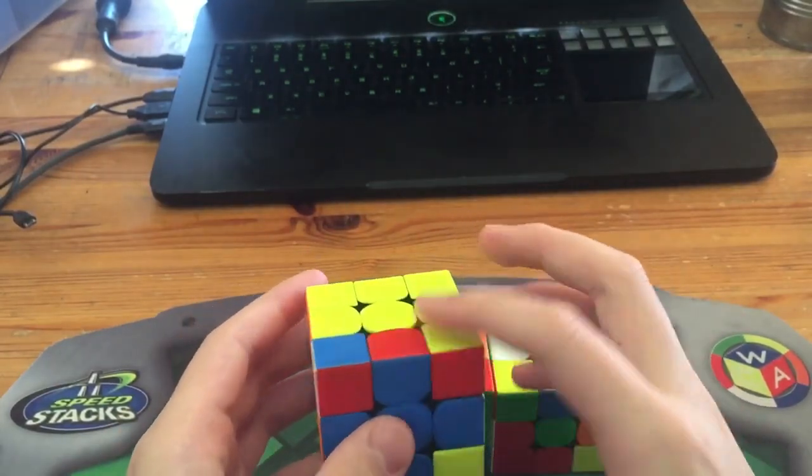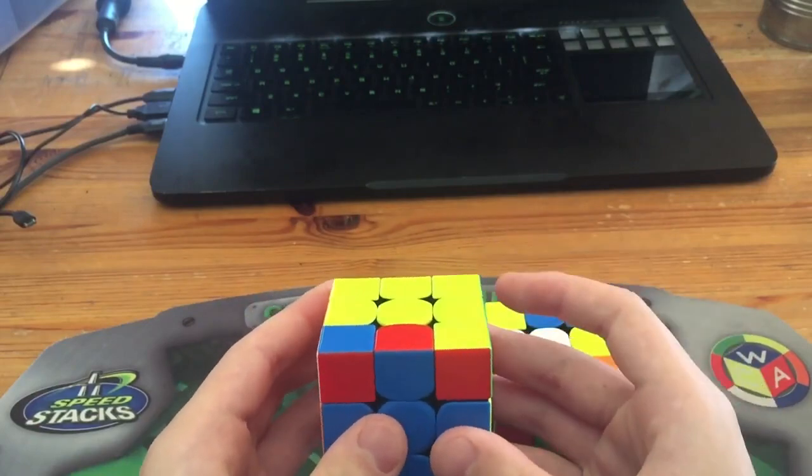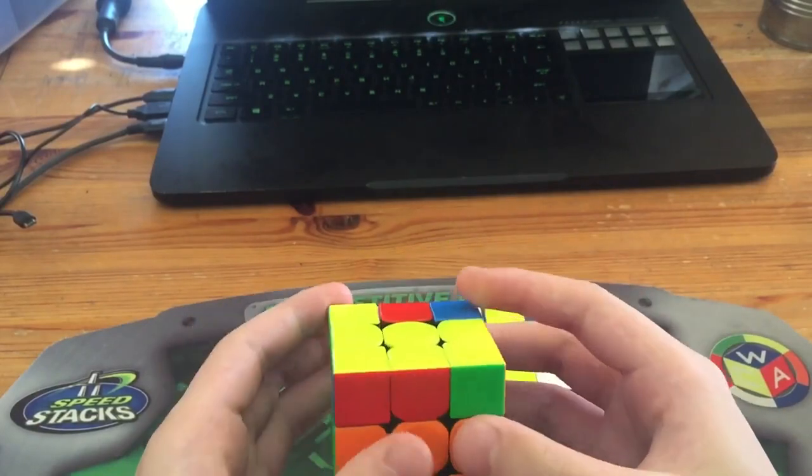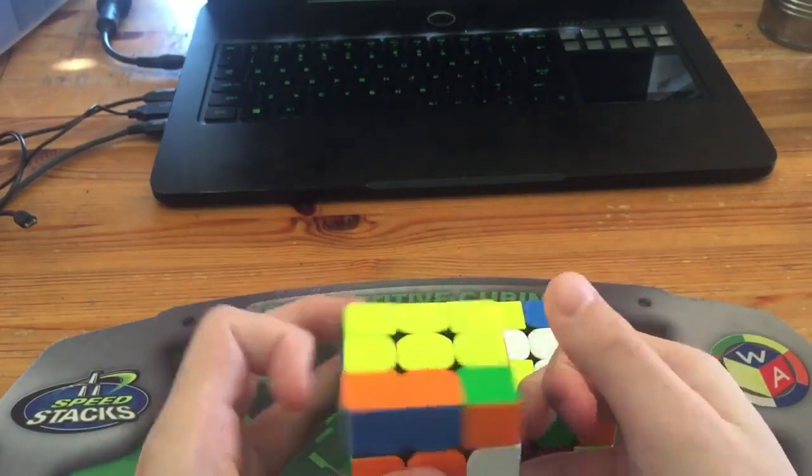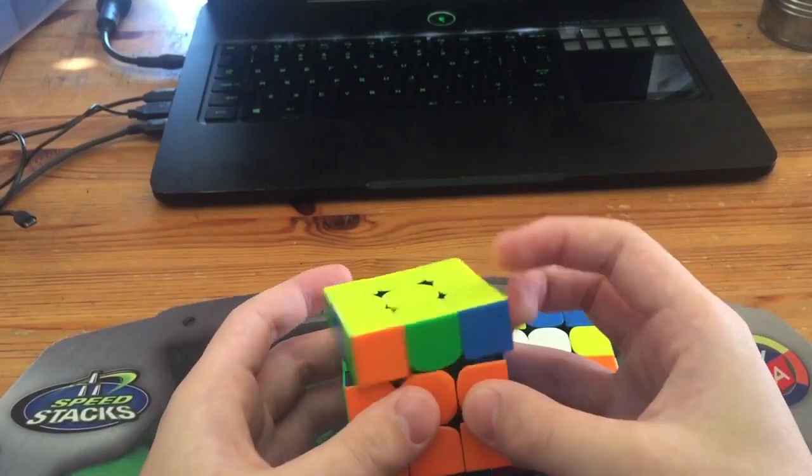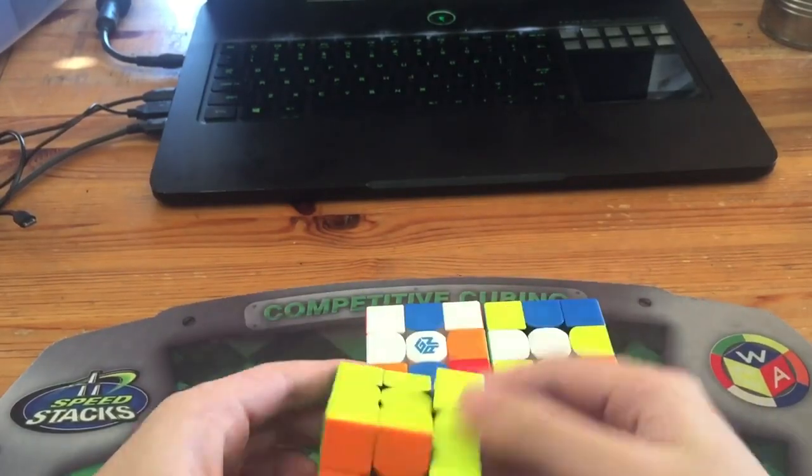And here, this is a situation I've gotten a lot of times. I don't know the alg for this OLS, but I know that if I solve it the standard way, I'll get a sune with a U' AUF beforehand. And now I have PLL.